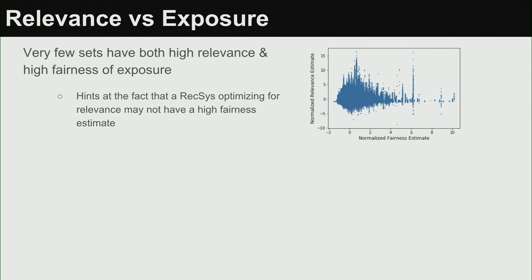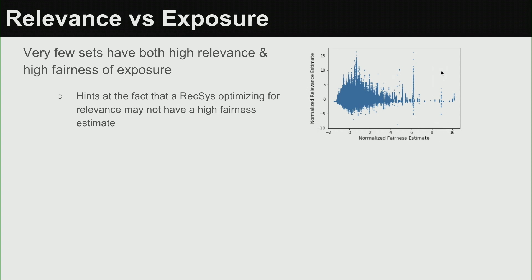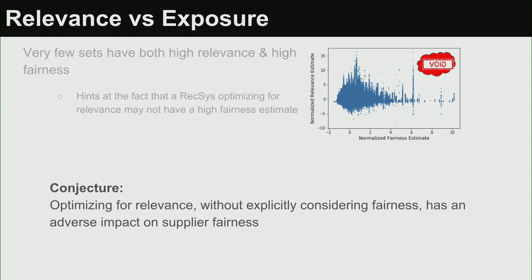Coming to the relevance versus exposure analysis: if I plot it, what it shows is that not many highly fair playlists have high relevance — there's a void in that region. If a playlist is super relevant it's not fair; if it's super fair it's not relevant. This is the root cause of the problem. This hints that a recommendation system optimizing only for relevance may not have a high fairness estimate, so the conjecture is that optimizing for relevance without explicitly considering fairness adversely impacts supplier fairness.